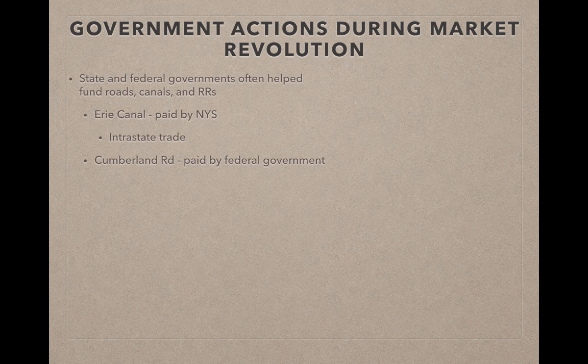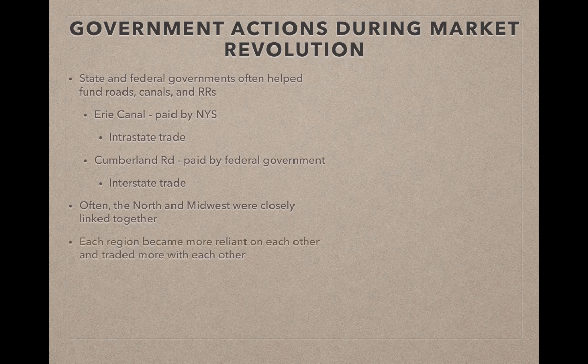The Cumberland Road connects many different areas of the country, and that's an example of interstate trade. Often, the North and Midwest were more closely linked together than the South with its large plantations. The South was really kind of left behind with these infrastructure projects. Each region became more reliant on each other and traded more with each other.